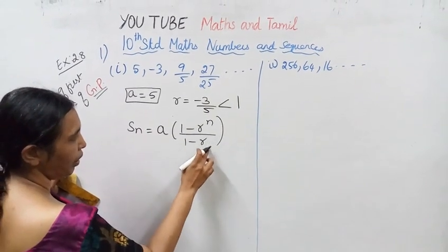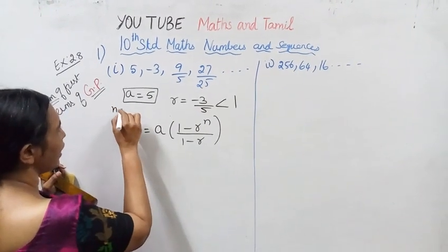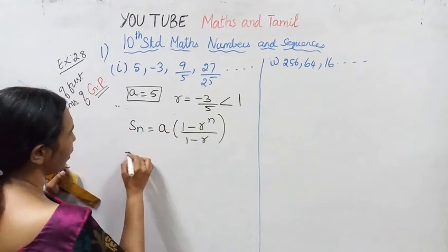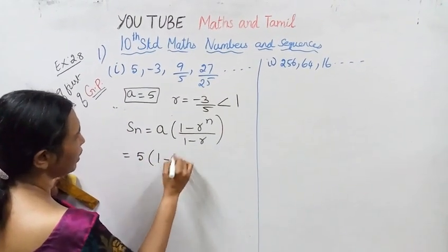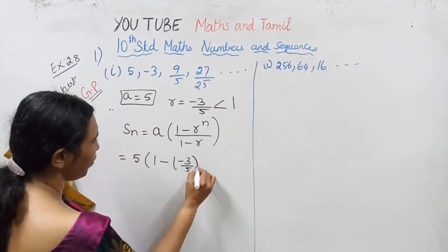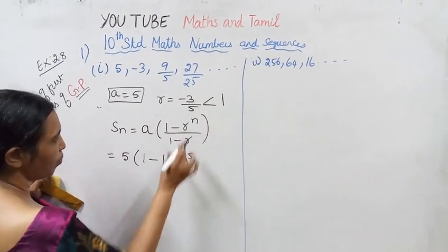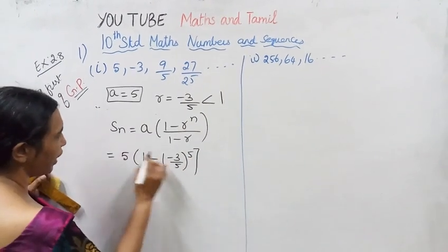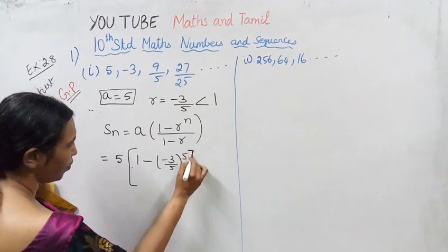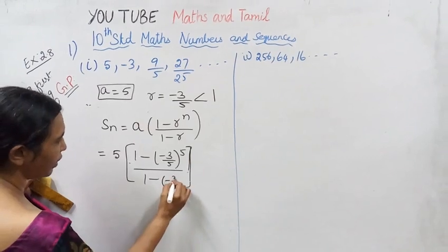1 minus r power n divided by a. Here a is 6, n is n — sum of first n terms. a is 5, 1 minus r^n, where r^n is minus 3 by 5 the whole power n. Then 1 minus r, that is minus 3 by 5 the whole power n divided by 1 minus r. So r is minus 3 by 5.